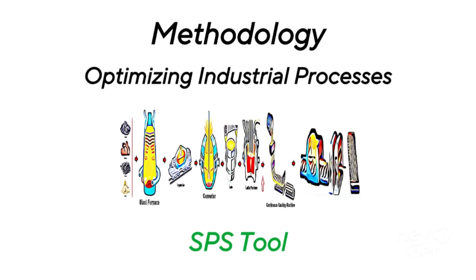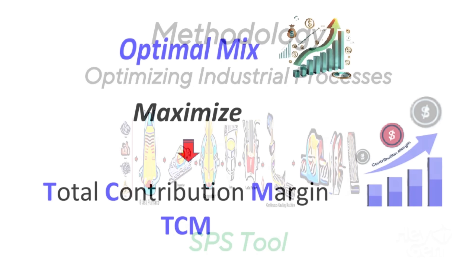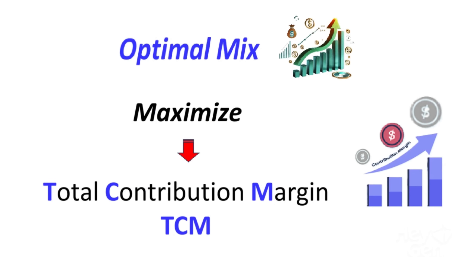This video outlines the methodology of SPS Consultancy, a company focused on optimizing industrial processes, specifically in the steel and metallurgical industry, using the SPS tool. The core problem addressed is determining the optimal mix which maximizes the total contribution margin, TCM, by balancing commercial and production constraints.